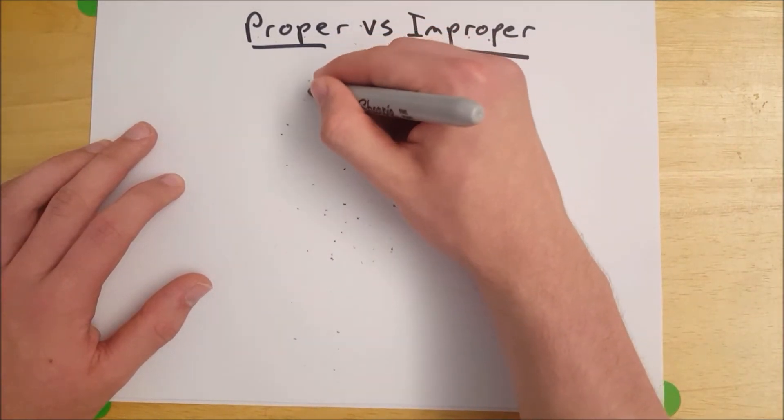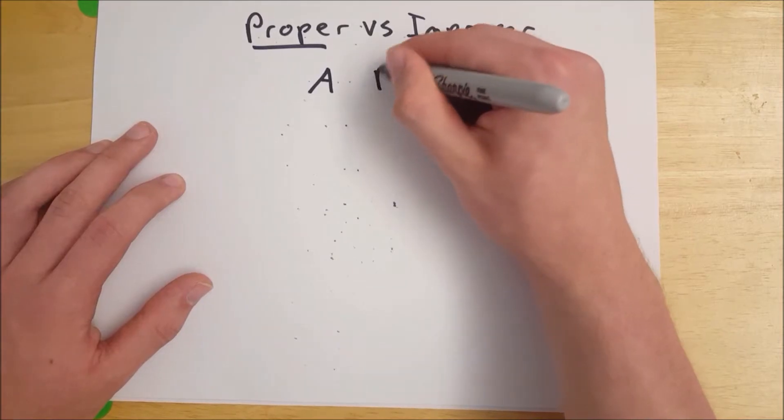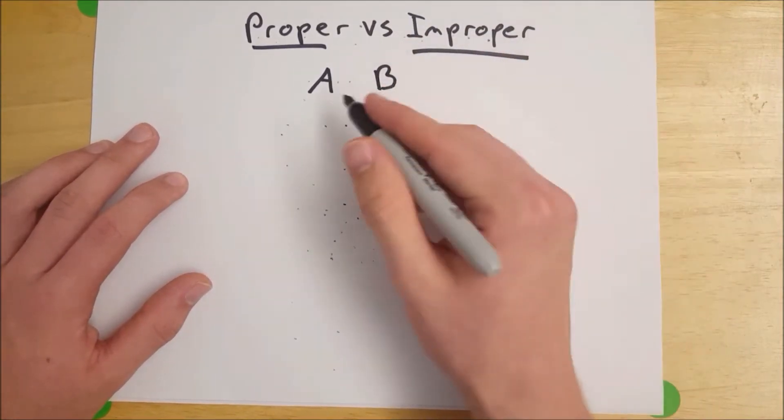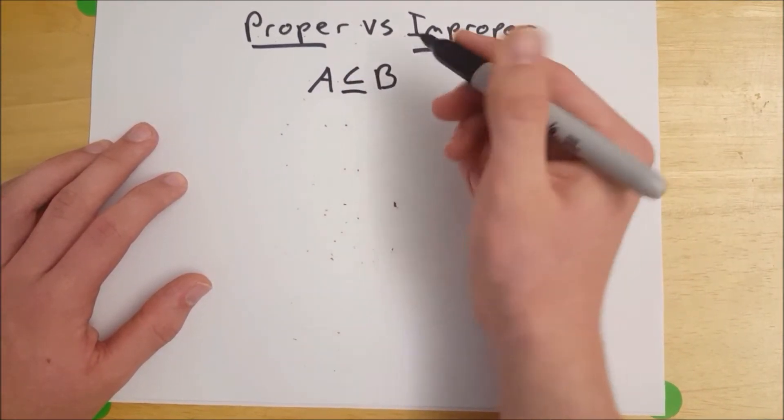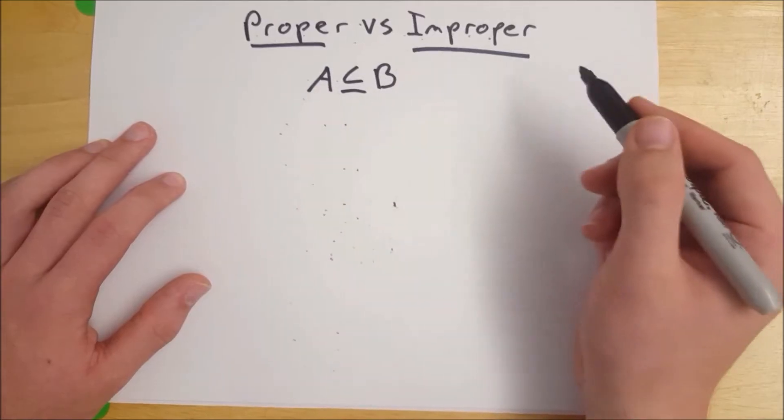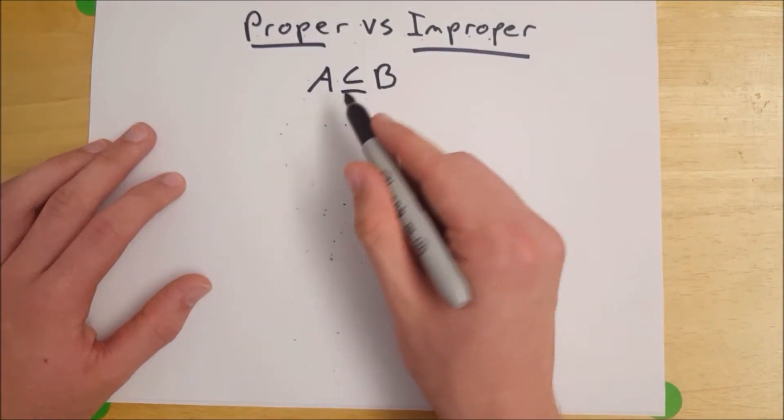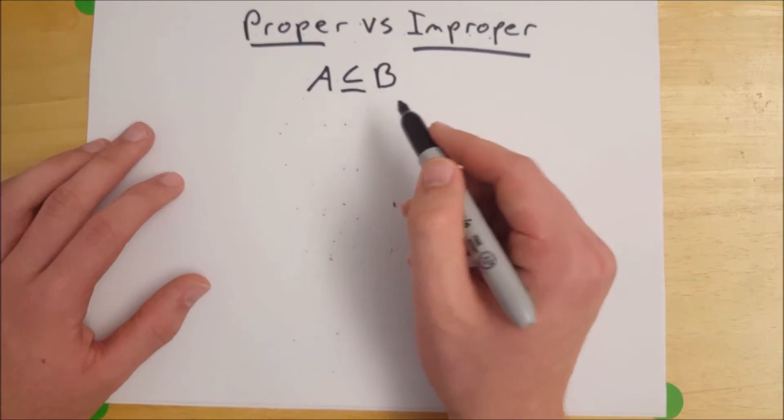So let's say we have a set A and a set B. Remember that to say A is a subset of B, we use that symbol, a C with a line under it, and that means that all of the elements in A are also in B.